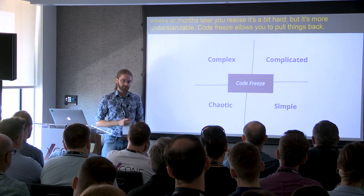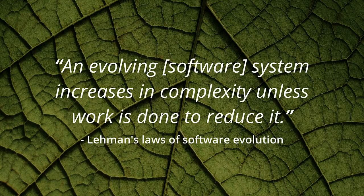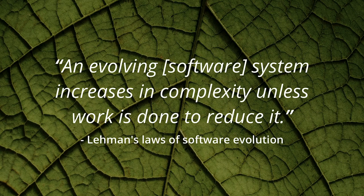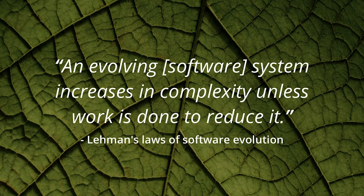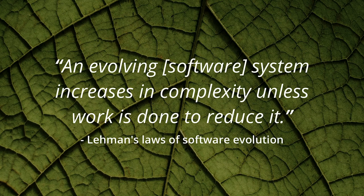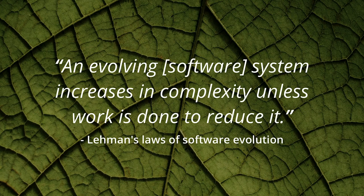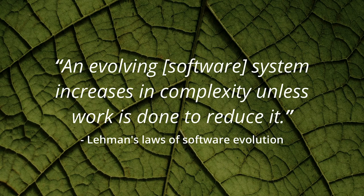But the reality is most systems aren't frozen. An evolving software system increases in complexity unless work is done to reduce it. That's the really key bit there. This is the second law of thermodynamics but with the word 'software' in it. Silicon Valley just reinvents public transport or houses and is really proud of themselves. We've done it with physical laws now. As systems evolve, they increase in complexity. Chaos engineering is a tool for managing that increase in complexity.